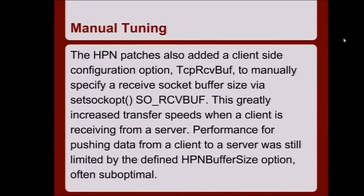One thing we found is that the HPN patches added a feature where on the client side you can optionally set the receive buffer size — it calls setsockopt and forces the buffer to a bigger size. That only works when the HPN-patched SSH version is on the receiving side of the connection. If you're pushing data, setting your receive buffer bigger doesn't help. But for our servers receiving mirrored data for PCBSD and TrueOS, it allowed them to set a larger socket buffer.